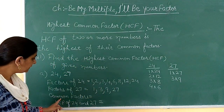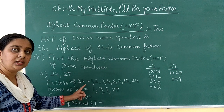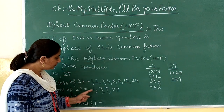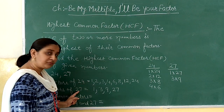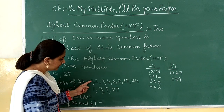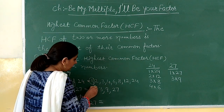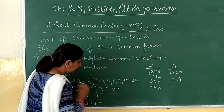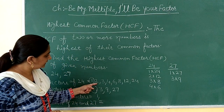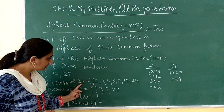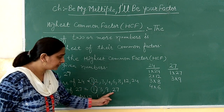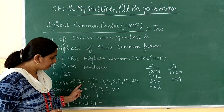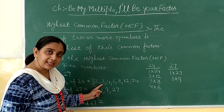So now we will write the common factors. Look — one is a factor of 24 and one is a factor of 27, so one is the common factor of these two numbers. Now look at the number two — two is a factor of 24 but two is not a factor of 27, so two is not a common factor. Then look for the next number, three — three is a factor of 24 and three is also a factor of 27.